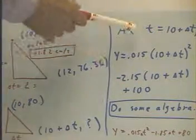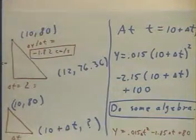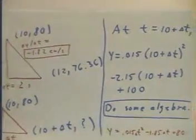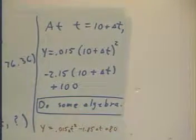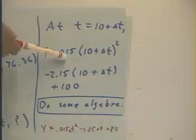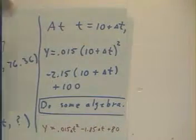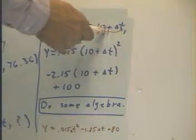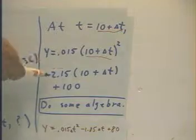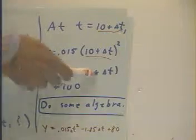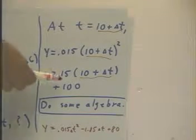When we do that, we see that at clock time t equals 10 plus delta t, y is going to be 0.015, our a coefficient, times the square of the time coordinate. So we've got clock time 10 plus delta t. We're going to plug it in for t and square it, minus 2.15, our b coefficient, multiplied by the 10 plus delta t, plus 100.